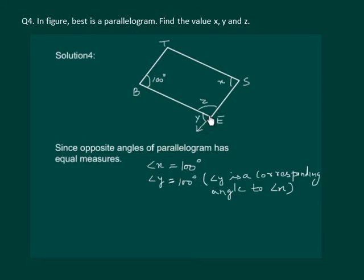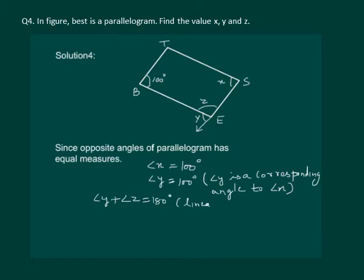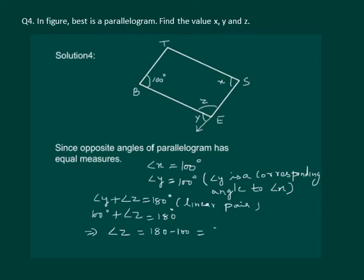Angle y and z form a linear pair and we know that the sum of a linear pair is 180 degrees. y is 100, that means z is 180 minus 100. So, angle y plus angle z should be 180 degrees. Since angle y is 100 degrees, angle z is equal to 180 minus 100, that is equal to 80 degrees.